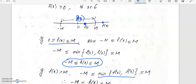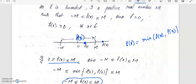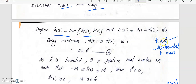You will have minus m less than or equal to h of x less than or equal to m, provided if you define h of x in this manner. If h of x is defined to be the minimum of f of x and l of x, then h less than or equal to f, and you can see that h will always lie between minus m and m.